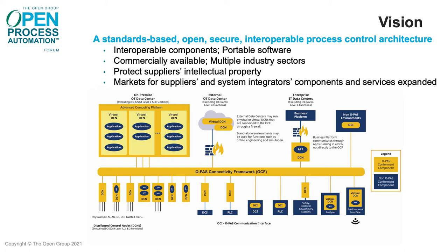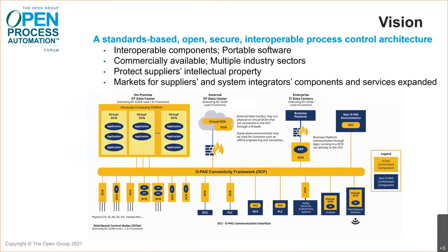OPAS systems are centered around a connectivity framework based on OPC UA, which facilitates communication between any participating control nodes, which we usually call DCNs, or distributed control nodes. DCNs can be dedicated to I/O for measurement and control, or to computation, a mix of both, a gateway to systems such as PLCs or DCSs, or to other equipment such as analyzers or non-OPAS subsystems.